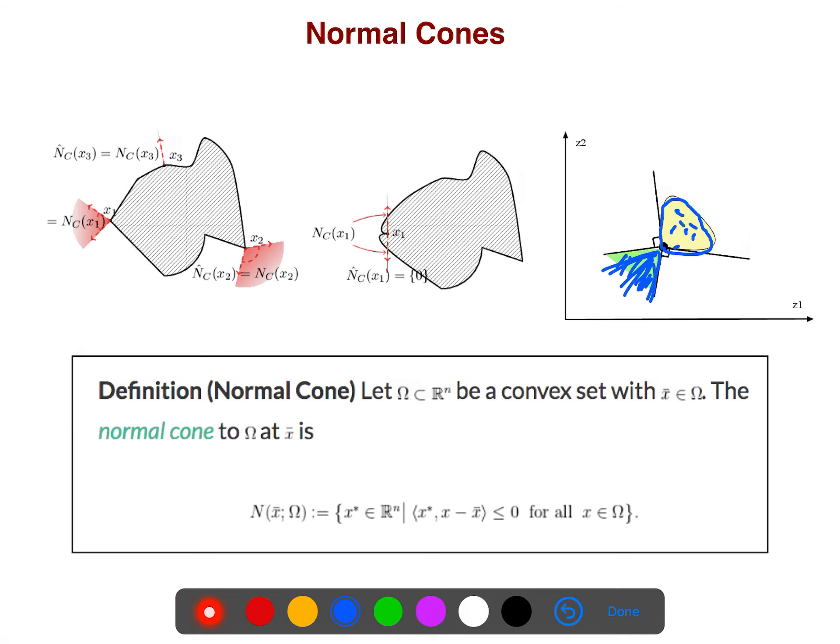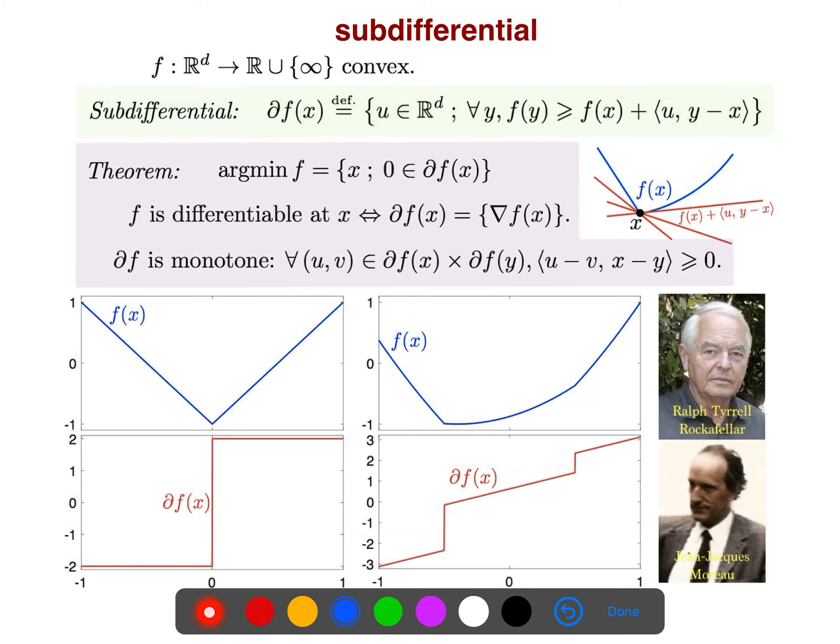And if we collect all of the such vectors, then it's a normal cone. And, for example, here, the normal cone is this set, if evaluated at this point. So, normal cone at this point, normal cone at this point, normal cone at this point could be different.